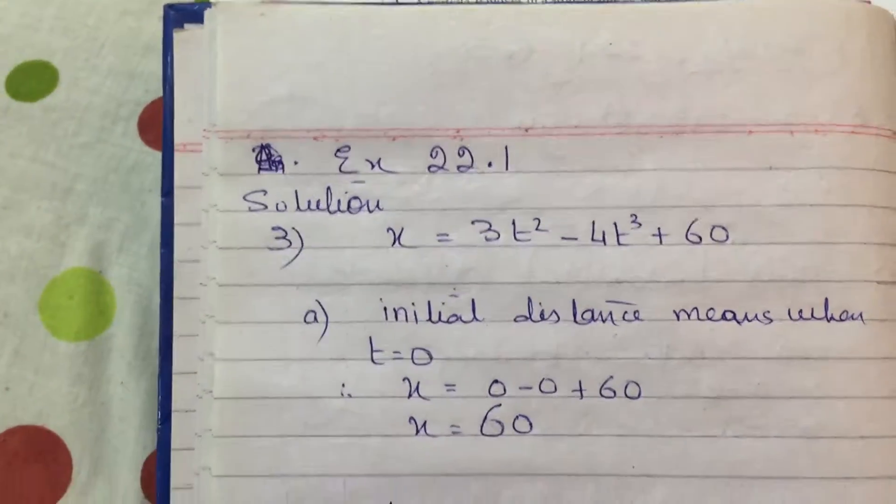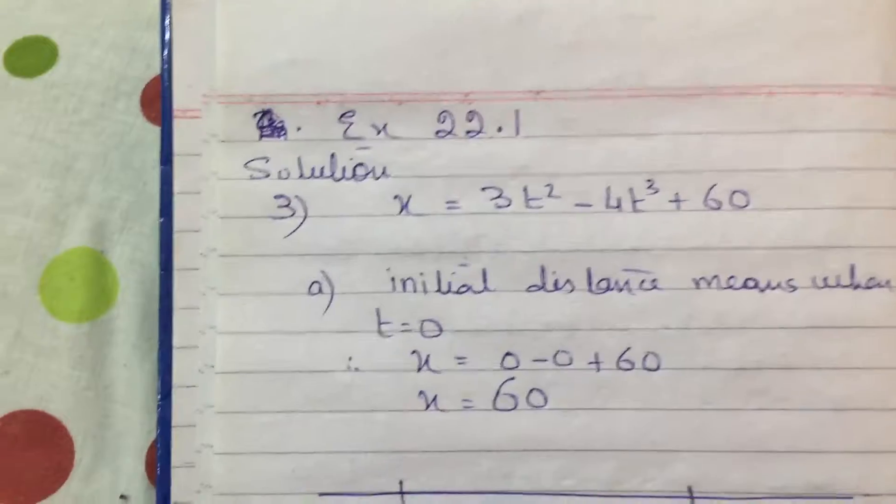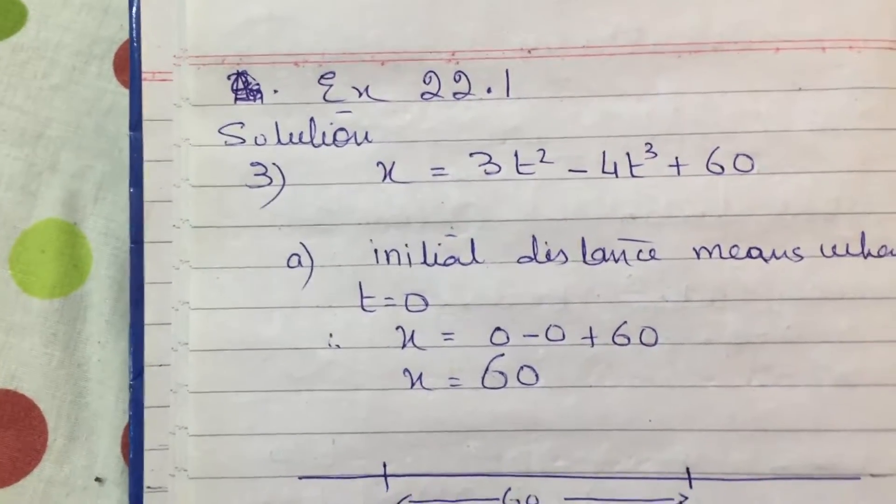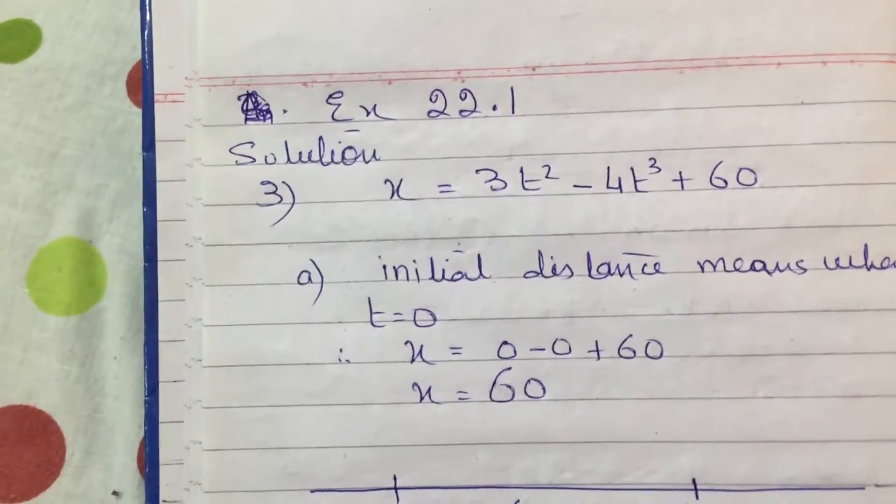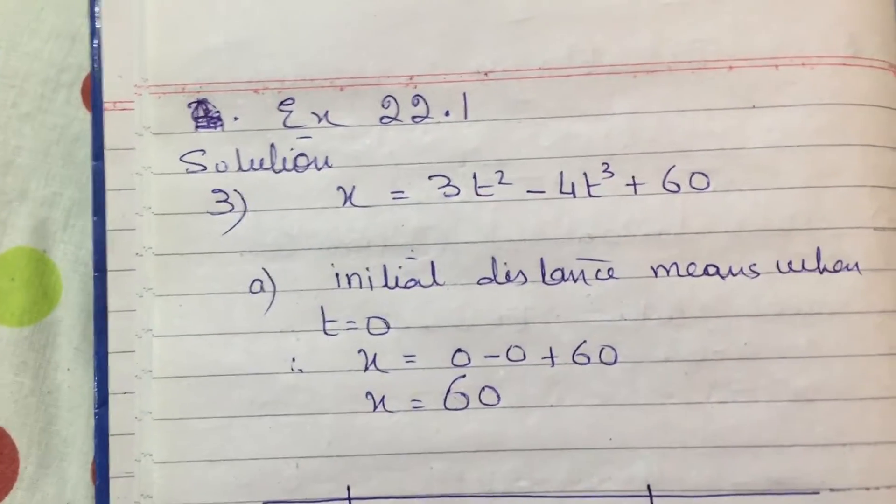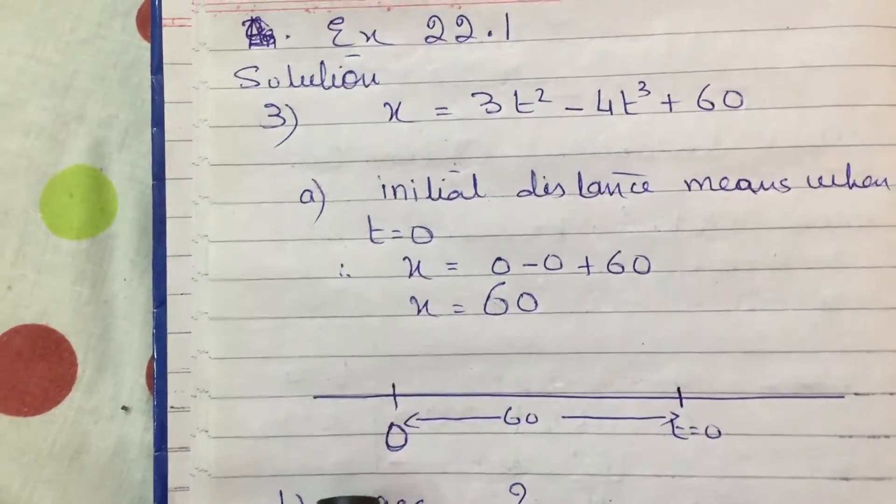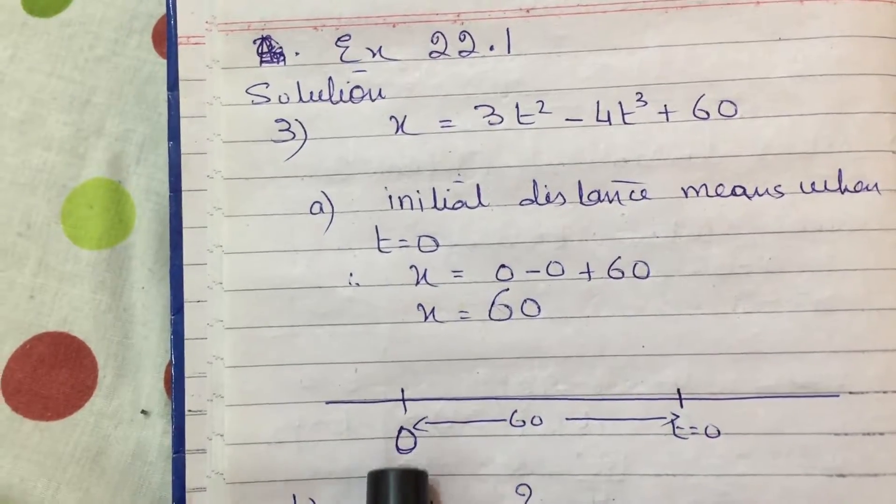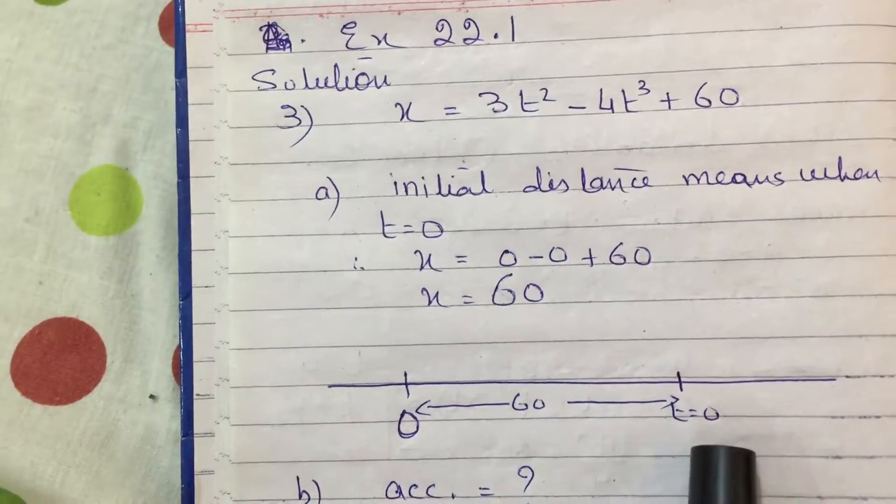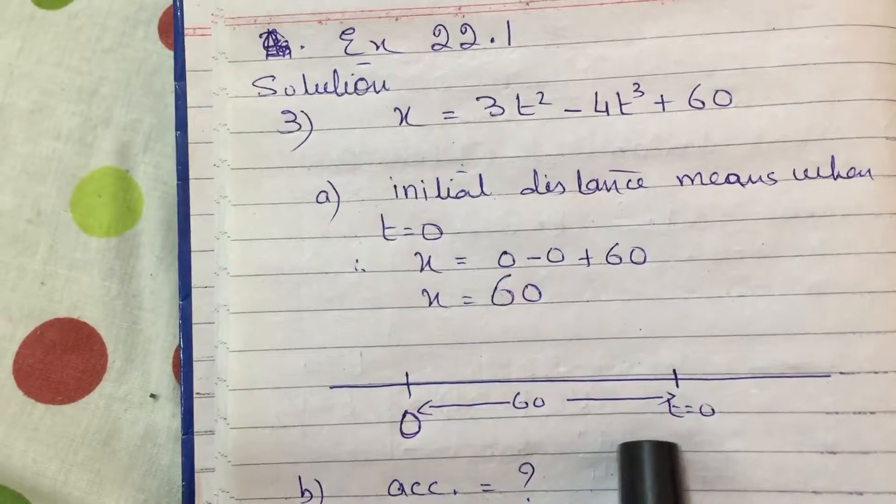So you will substitute t equals 0 in the displacement equation and you will get x equals 60. Now the displacement equation always gives you distance from origin. If you look at it on this number line, it means origin is here, and when time equals 0 the object was 60 meters from it.